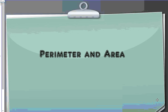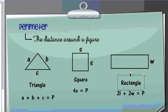In this video, we're going to talk about perimeter and area as it pertains to pre-algebra. First, we're going to go over a couple formulas. For perimeter, perimeter is the distance around a figure.